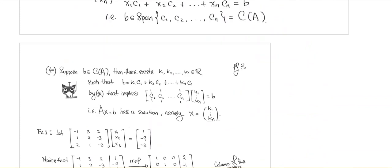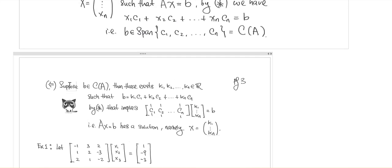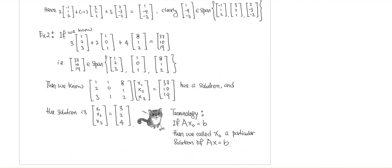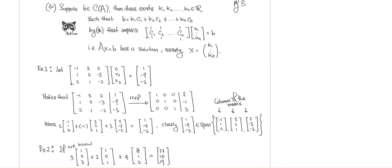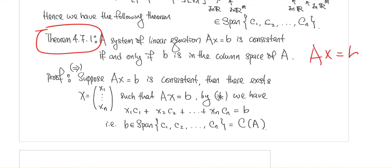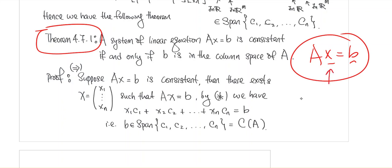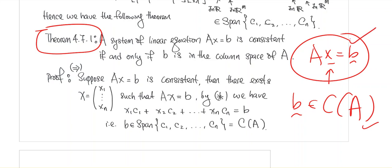One of the very critical things about all these vector spaces is the information they provide. Theorem 4.7.1 and theorem 4.7.2 tell us whether or not the system Ax equals b has solutions, and when it does, whether those solutions are unique or infinitely many. Theorem 4.7.1 says that whether the system has a solution completely depends on whether vector b is in the column space of A.